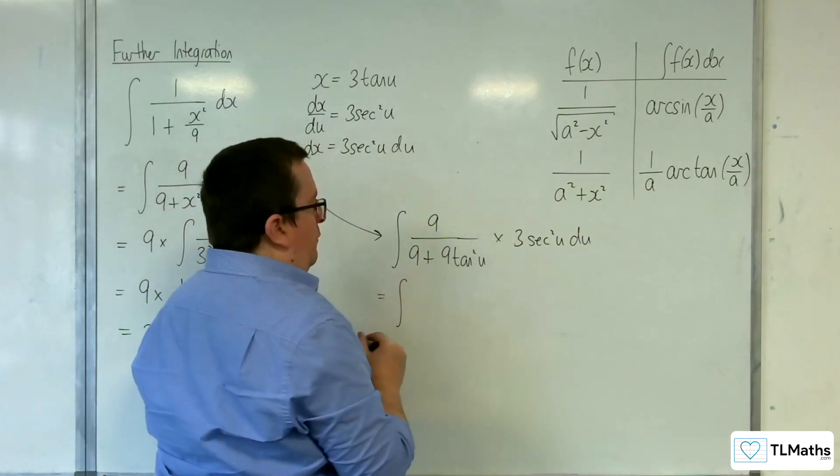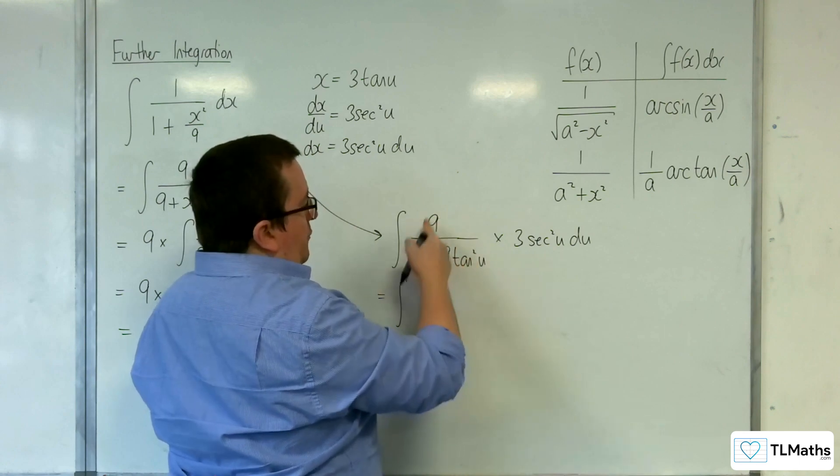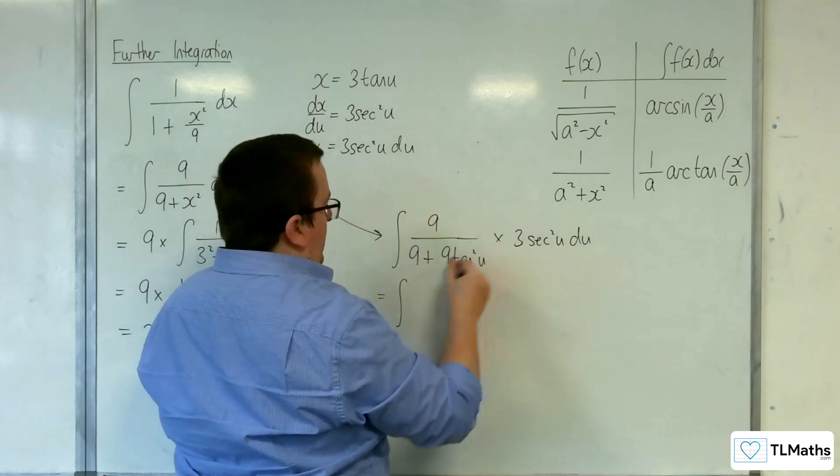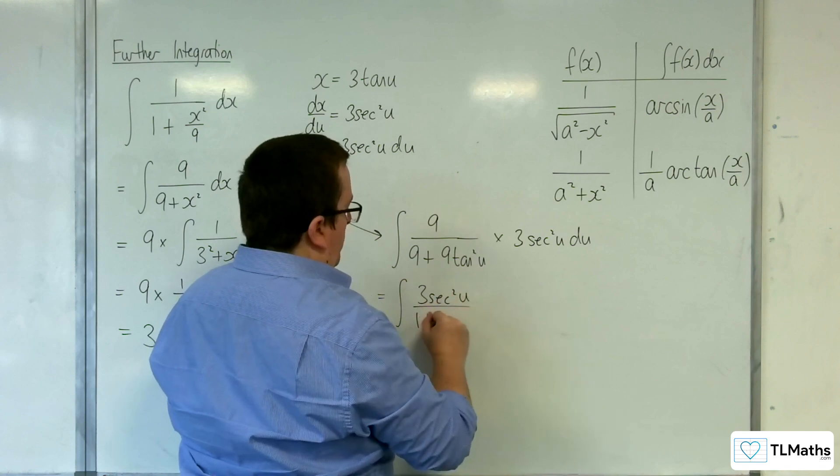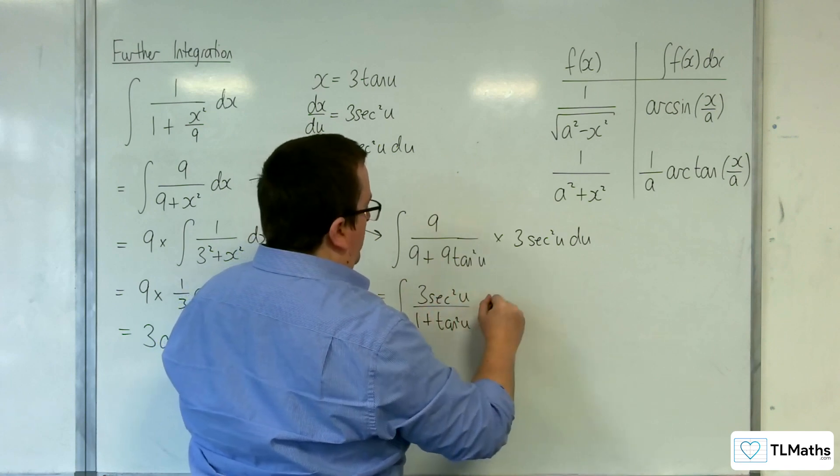Which is equal to the integral of—now we can cancel through the 9s here—3 sec squared u in the numerator, over 1 plus tan squared u in the denominator.